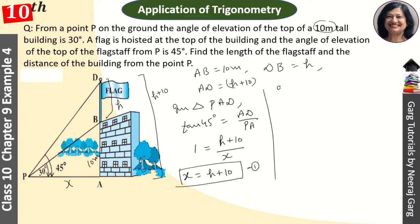Now we will take this triangle PAB. We will take this value of tan 30 degree. That is equal to 10 upon X. The value of tan 30 is 1 upon root 3, that is 10 upon X. So X is equal to 10 root 3. This is our value of PA. PA is equal to 10 root 3.